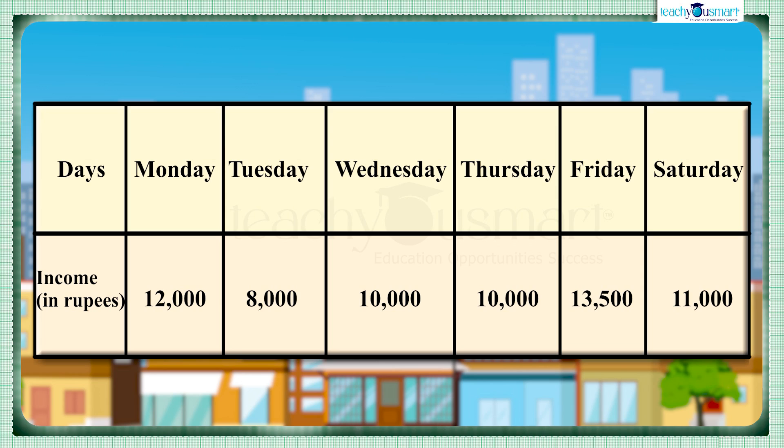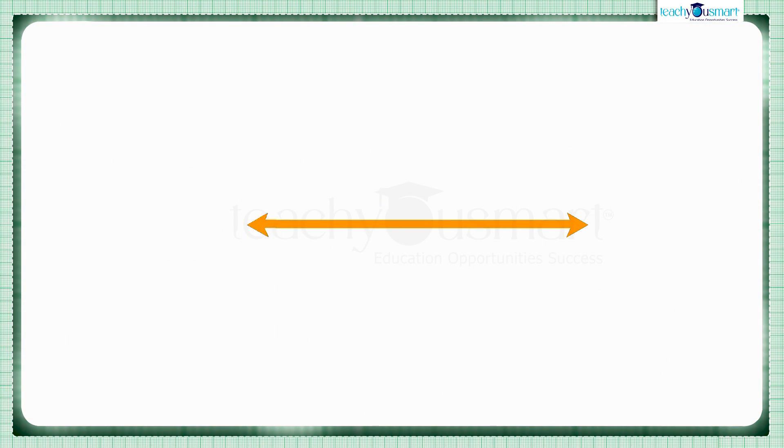We know that to draw a graph we need a horizontal line and a vertical line which are mutually perpendicular. These lines are called the axis. The horizontal axis is known as x-axis and vertical axis is known as y-axis.